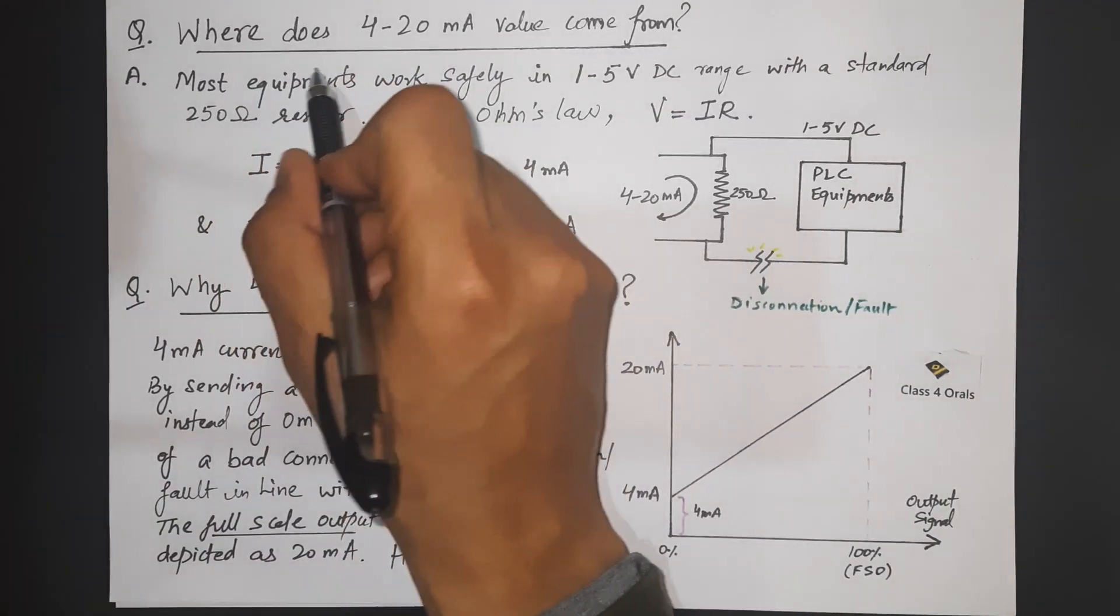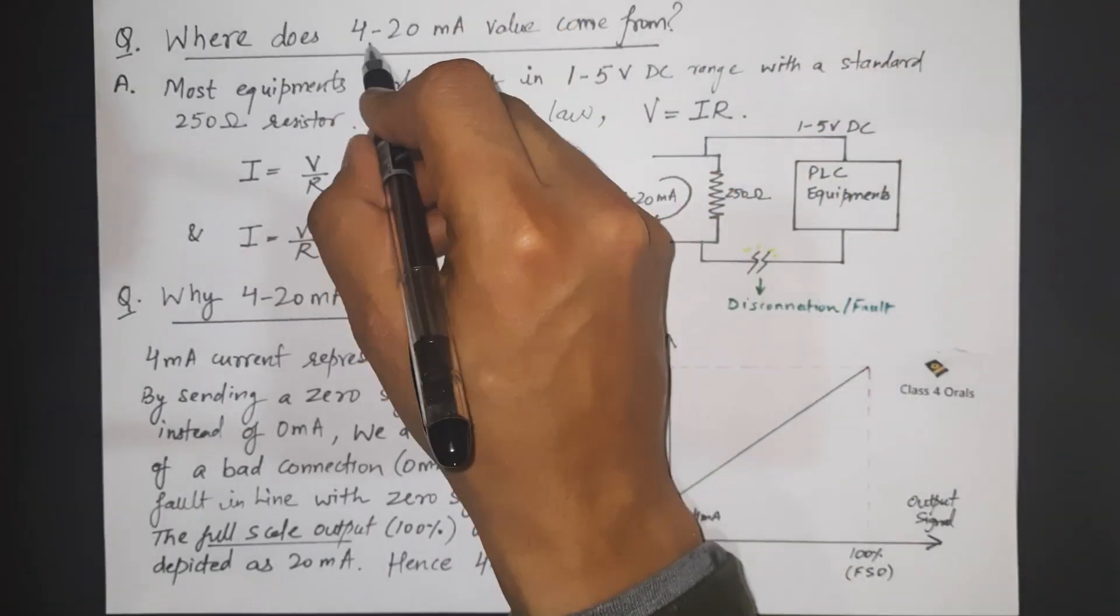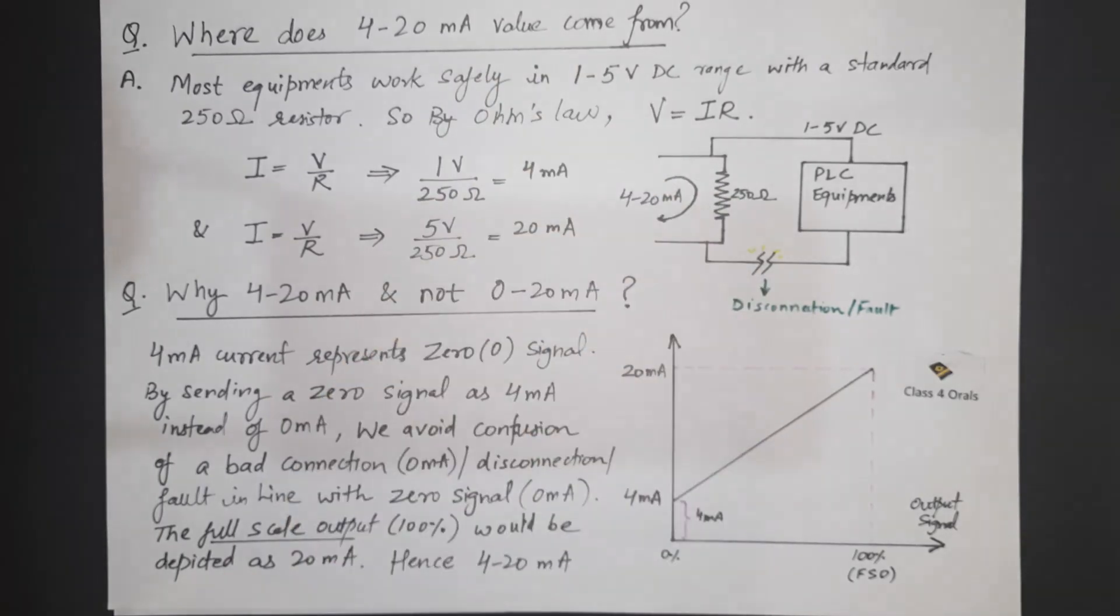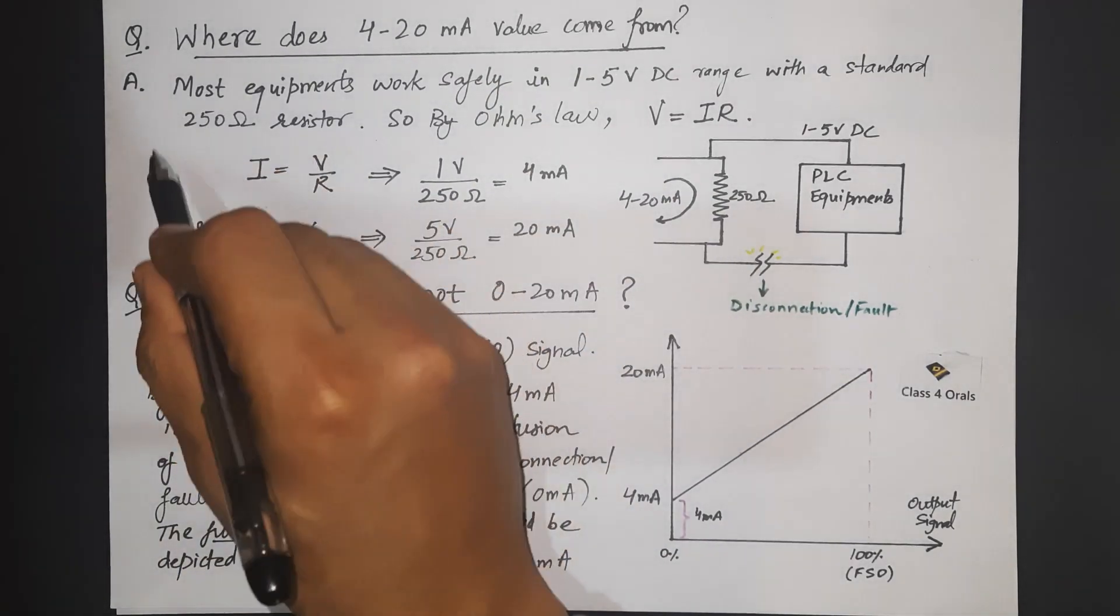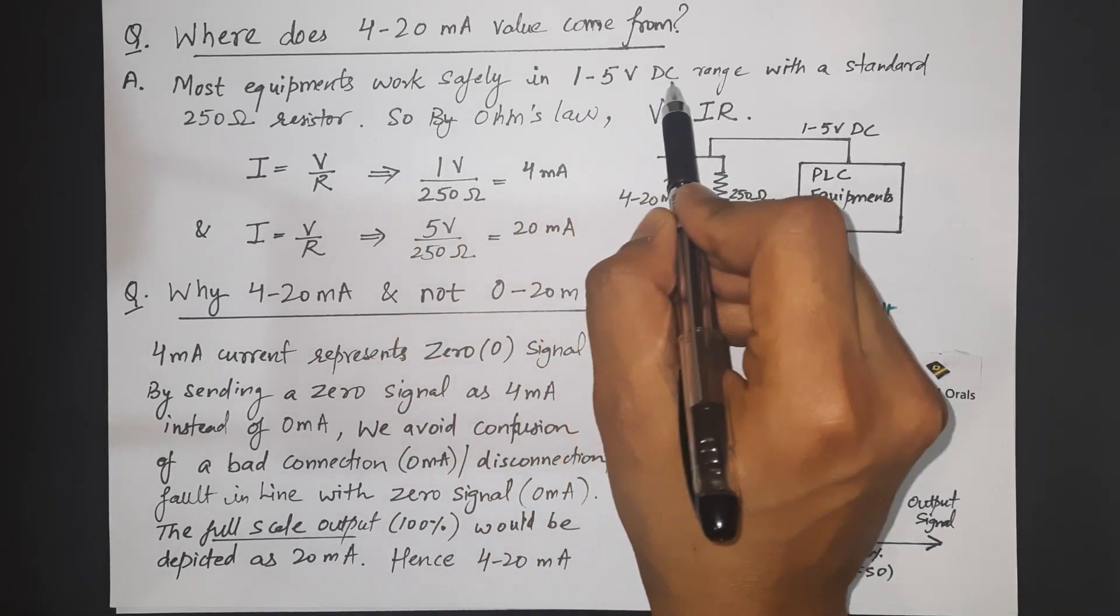Now, where does the 4 to 20 mA value come from? You might be wondering that from where this 4 to 20 mA range has come. So the answer to this question is most of the equipments work safely in the 1 to 5 V DC